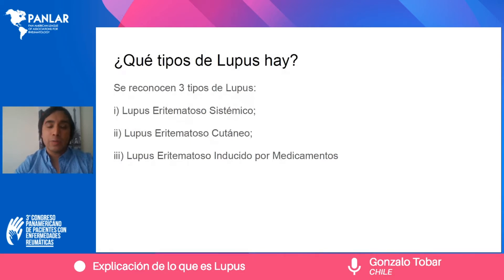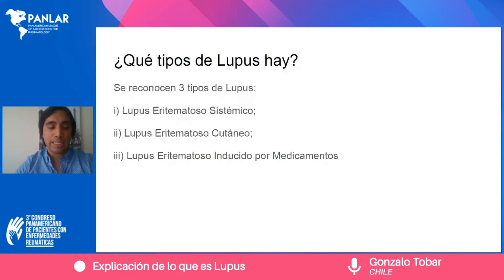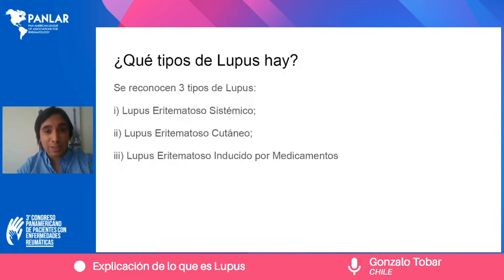El lupus eritematoso sistémico es el que produce daño y manifestación en órganos o sistemas, y de ahí tiene su nombre sistémico. En segundo lugar, hay un lupus que se llama eritematoso cutáneo o también discoide, que solamente va a tener manifestación y presentación en la piel.